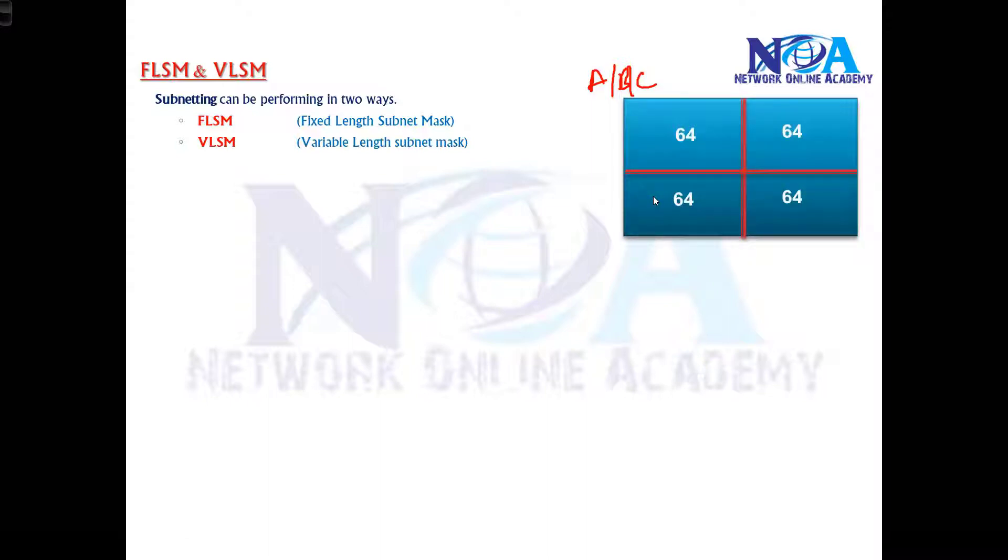Fixed Length Subnet Mask means all the networks are of equal sizes. Just like if you take an example of having a space and preparing some classrooms—in any college, probably you'll see all the classrooms are mostly of equal sizes.